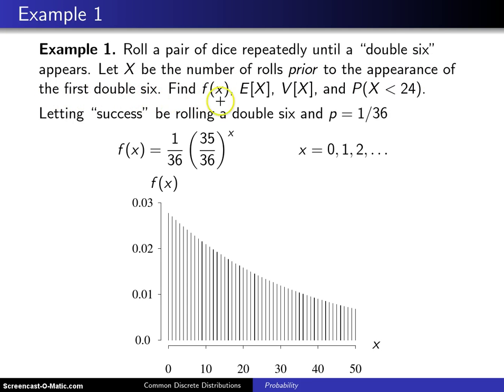Find the probability mass function f of X, find the expected value of X, the variance of X, and the probability X is less than 24. We should throw in the fact that these are fair dice here.